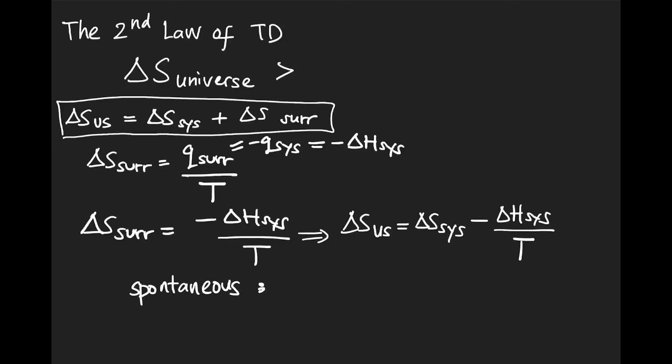So we can also say that we will have a spontaneous process if delta S of the system minus delta H of the system divided by T is bigger than zero.